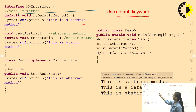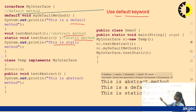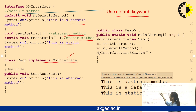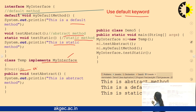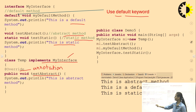An abstract method and a static method can also be defined inside this interface. The abstract method is declared and defined, and using the @Override annotation in the implementing class, the public void testAbstract method is overridden and defined using a print statement.